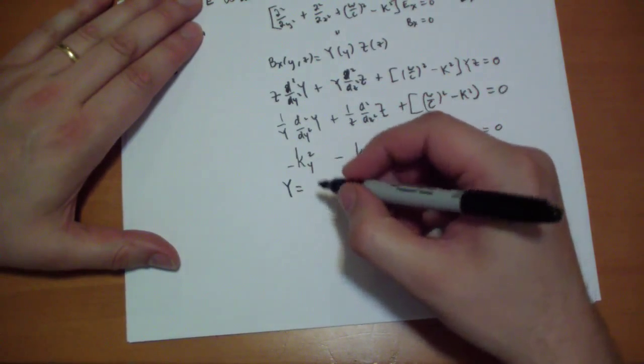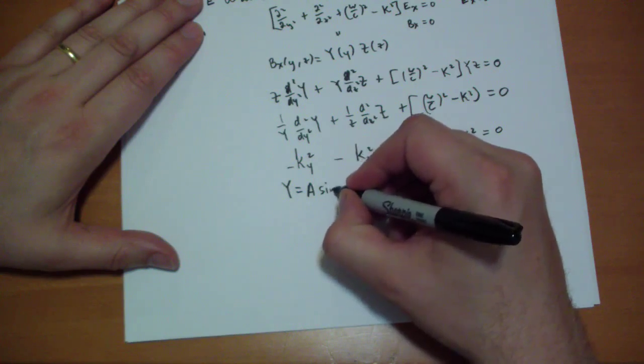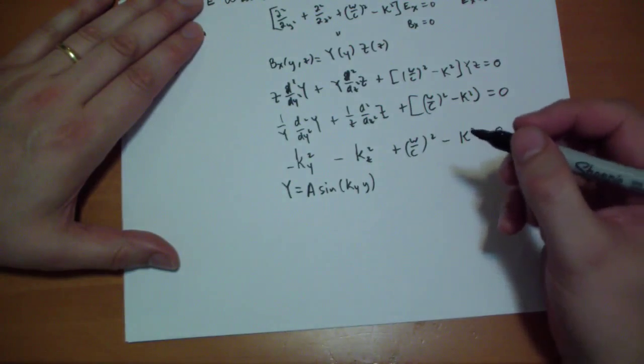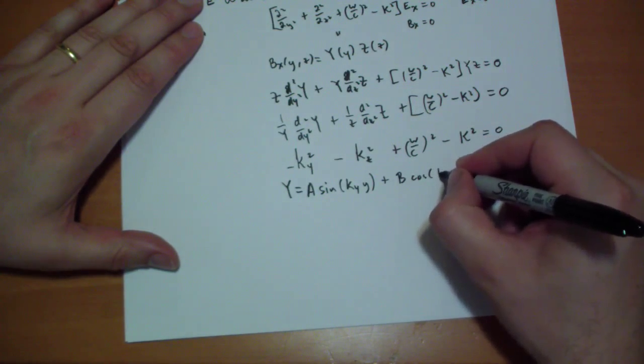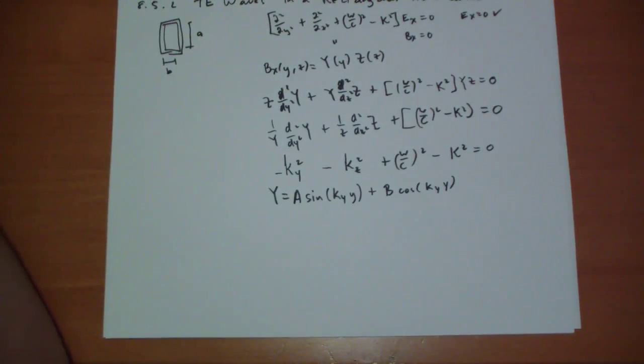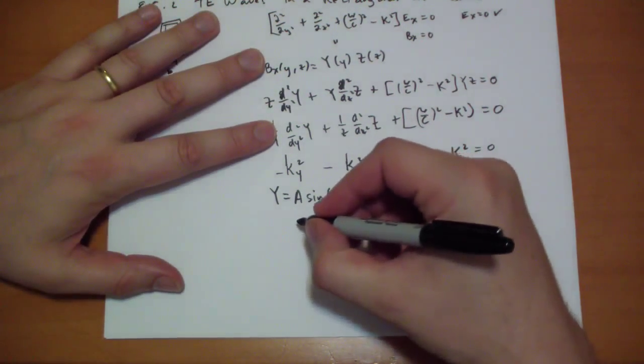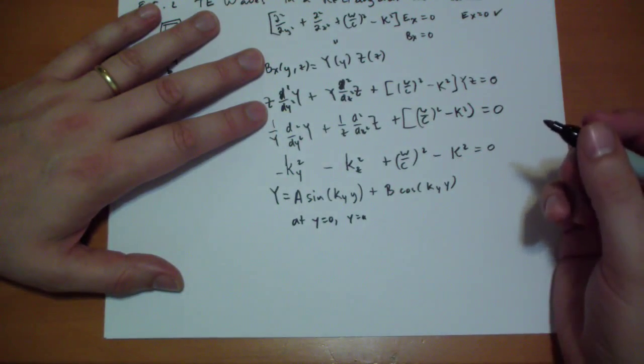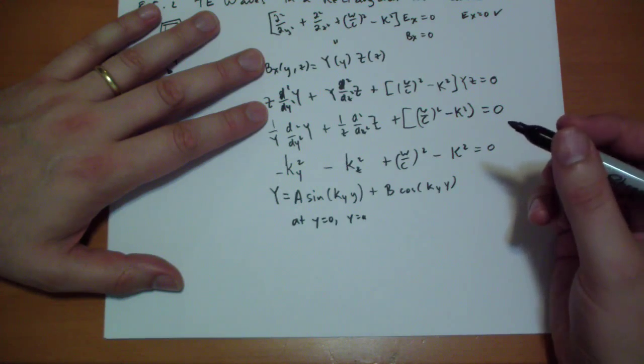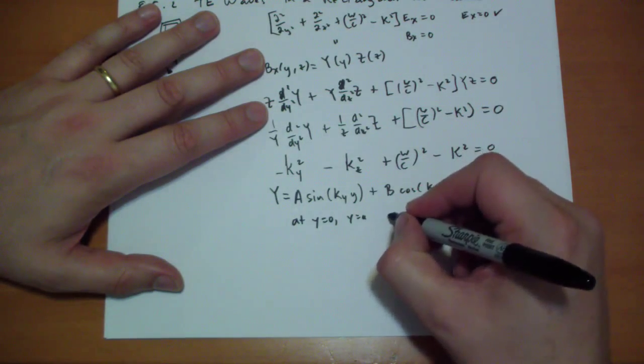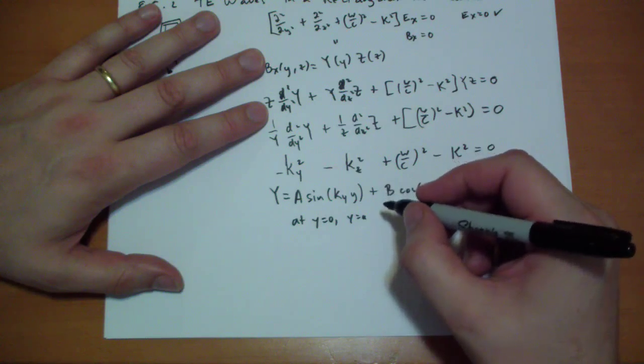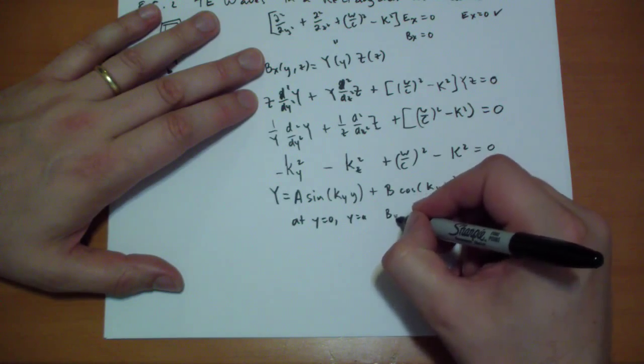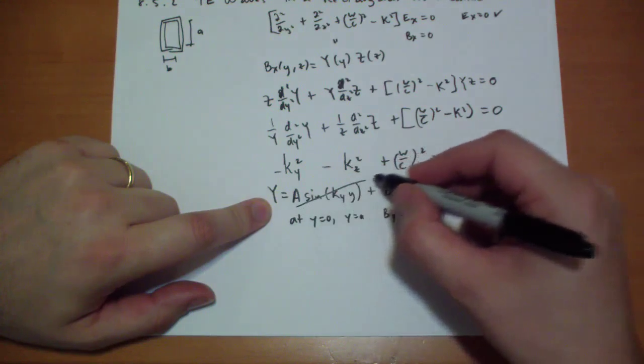So the general solution for the Y. So this has to equal that. So the Y must be something like A sine KY times the Y coordinate plus B cosine KY times the Y coordinate. So that will work. Except for when we apply the boundary conditions. Remember that just inside the surface, the electric field has to be, the electric field that's parallel has to be zero, but the perpendicular magnetic field must also be zero. So at Y equals zero, and Y equals A, we have the condition that BY has to be zero. And so that says that this term is no good to us.